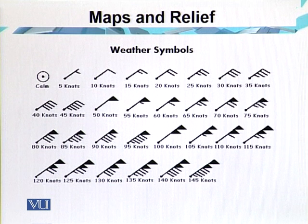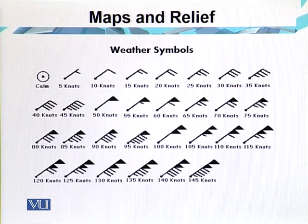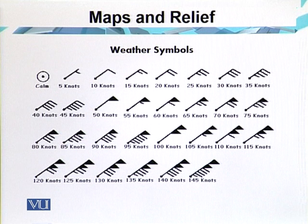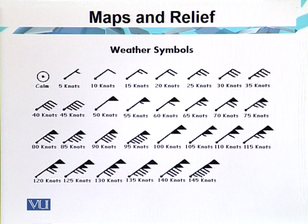Generally six weather elements are recognized: number one, temperature; number two, pressure; number three, winds; number four, humidity; and clouds and precipitation. With the help of symbols, all these weather elements are shown on the weather map.